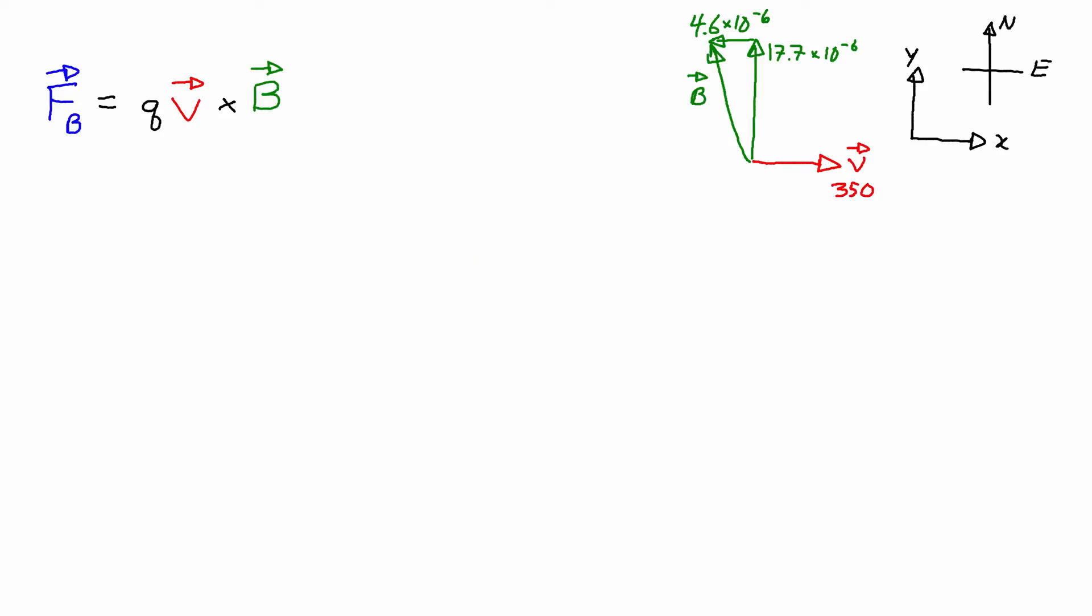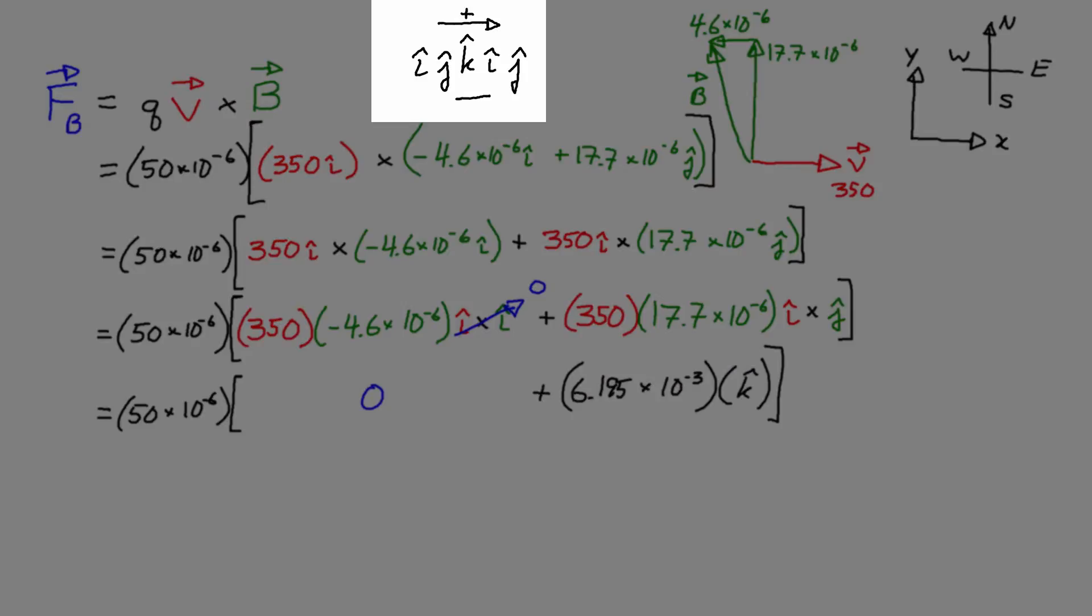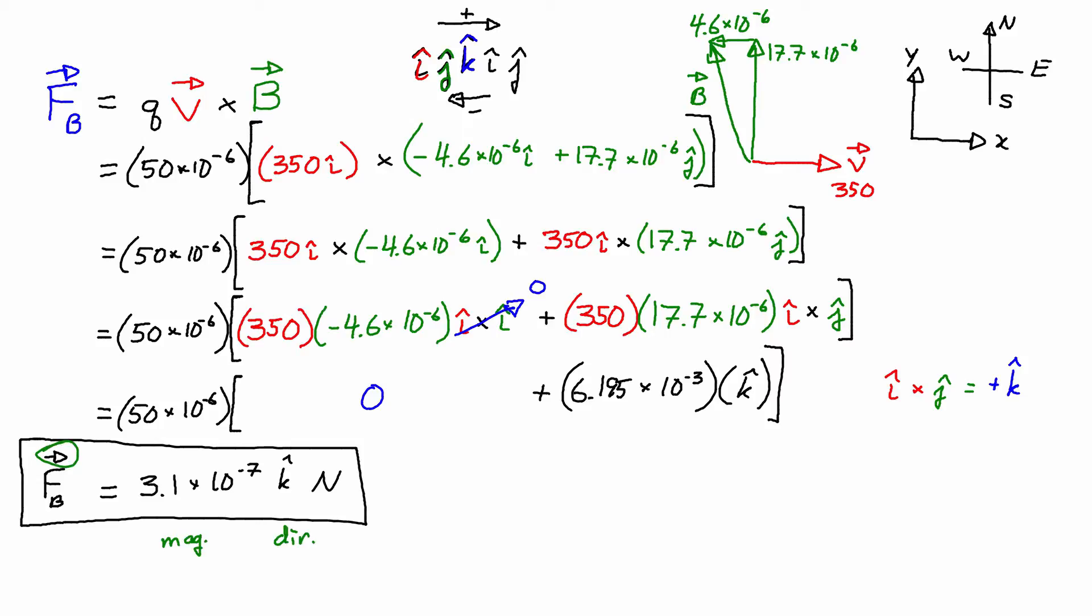In the previous video, which you can find a link to in the description, I used the vector components. In this case for this problem that's easier because we're given the vector components for the magnetic field B both in terms of north and west and then the velocity v which is east, and these work out really well with an x-y axis.